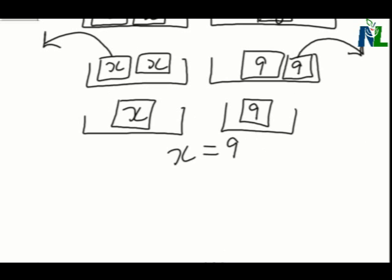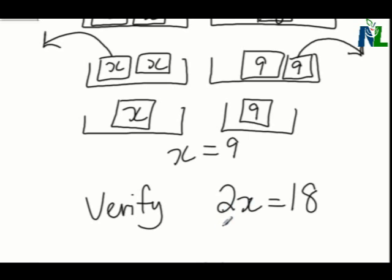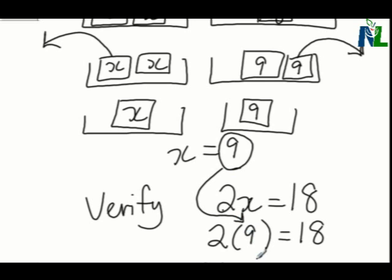And you learned last day how to verify. So what we're going to do now is we're going to check and see if our answer is right. Our equation was 2x equals 18. 2x means 2 times x, and we want to see if that will equal 18. We said x is 9, so we're going to put the 9 in the bracket. And 2 times 9 is 18. So since the left side equals the right side, we know we got the right answer.